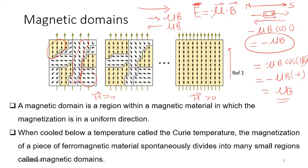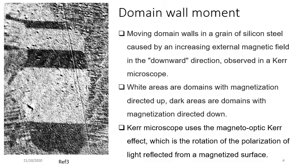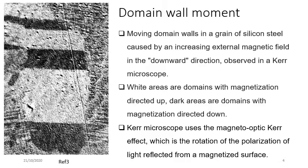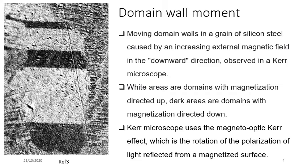A magnetic domain is a region within a magnetic material in which the magnetization is uniform in direction. When cooled below the Curie temperature, the magnetization of a ferromagnetic material spontaneously divides into many small regions called magnetic domains. To understand the movement of domains, a moving domain in the grain of a silicon steel is observed using a Kerr microscope.